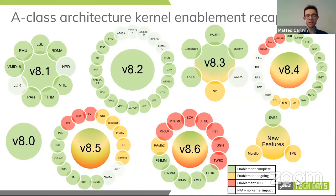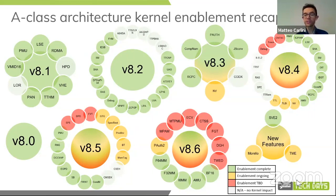On the 8.6 architecture, we are at the beginning of the enablement. 8.6 was announced last September, six months ago, so we enabled the bits and pieces through hardware caps exposed to user space, and then we are working on the rest of the enablement in priority order, which I will talk about later.